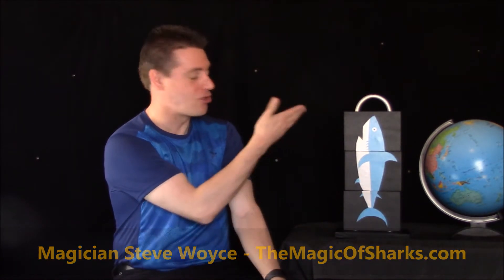A shark's body is streamlined, torpedo-shaped, to allow it to move through the water nice and fast.